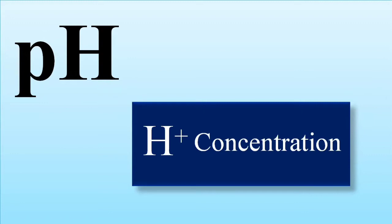There is a specific formula for pH, and the hydrogen ion concentration is related to the pH of the human body. As discussed in the previous lecture, molecules responsible for releasing hydrogen ions are known as acids, and molecules that accept hydrogen ions are known as bases. On the basis of hydrogen ion concentration, acids, bases, and pH are defined.